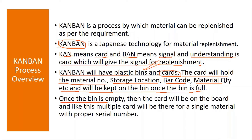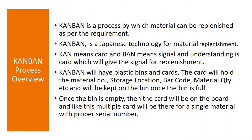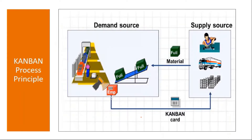Once the bin is empty, the card will be placed on the board. Multiple cards will be there for a single material with proper serial numbers. So basically, this is how the Kanban process works. Suppose you have a production line with a work center where you are constantly consuming a material.